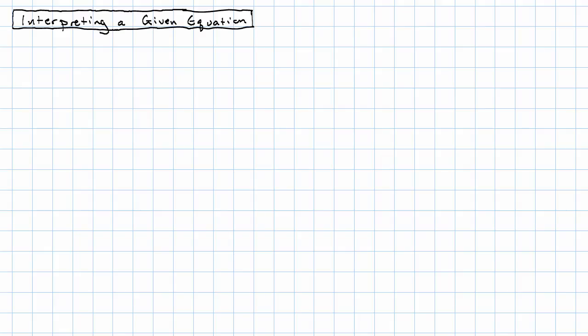Sometimes we have an equation in slope-intercept form that we got by some method other than looking at a table which reveals the rate of change and starting value. Maybe we're just given an equation of this kind.